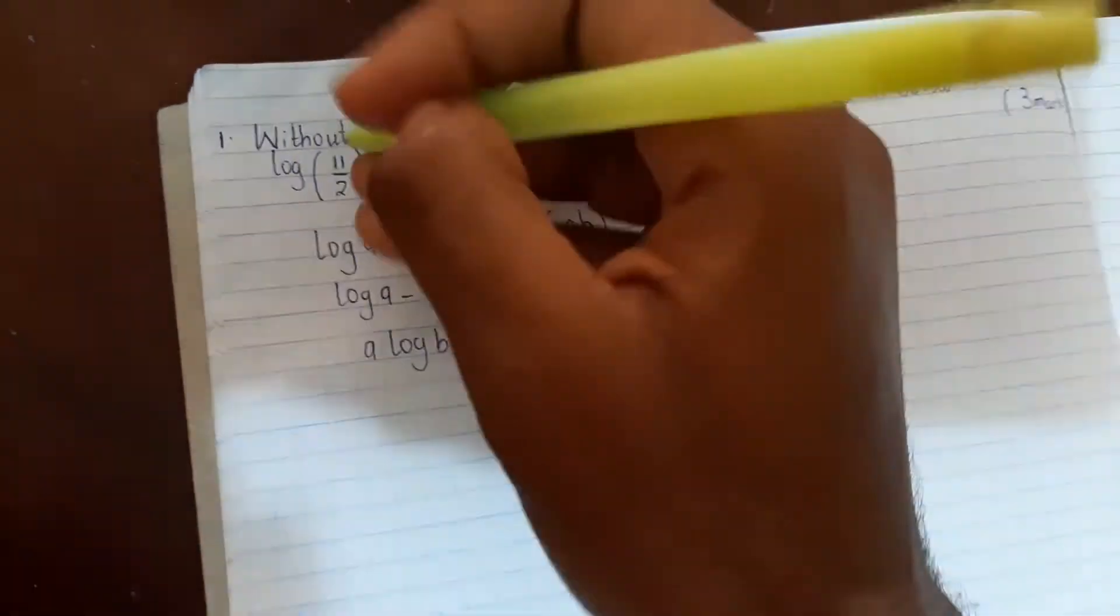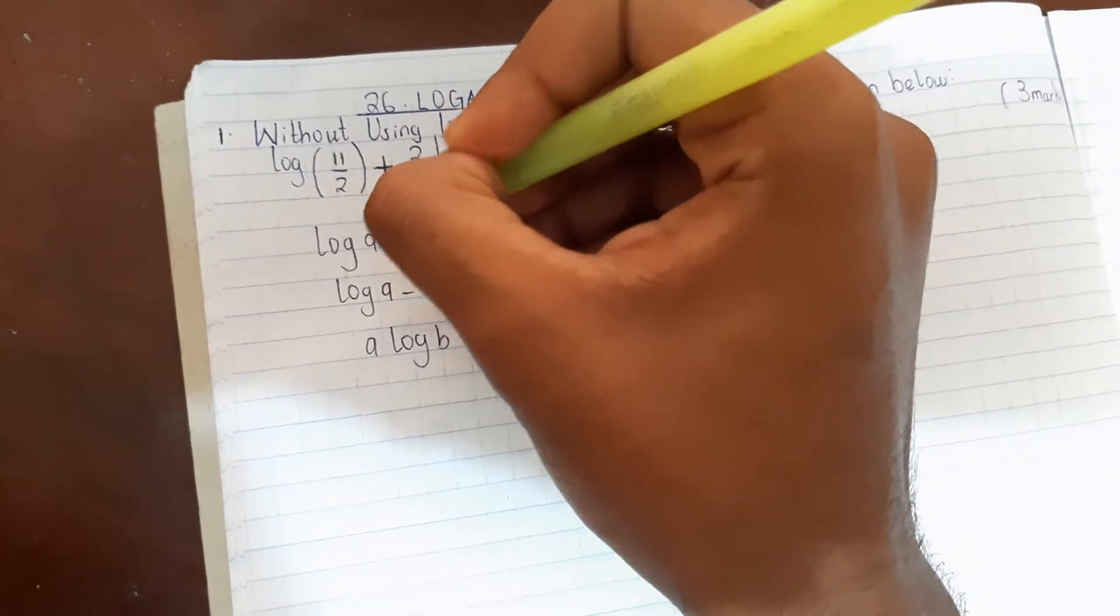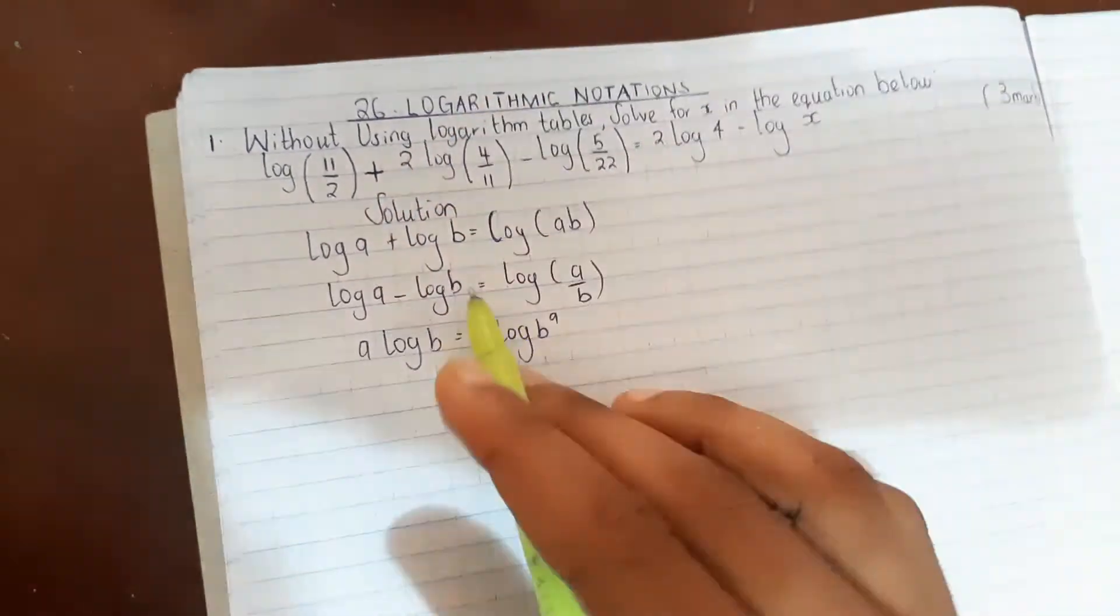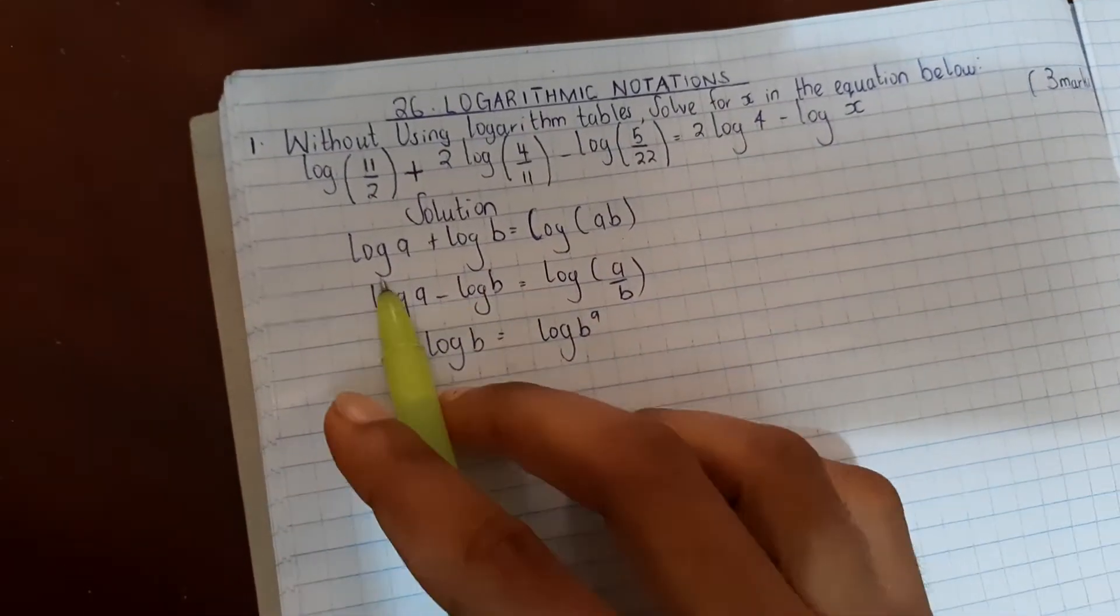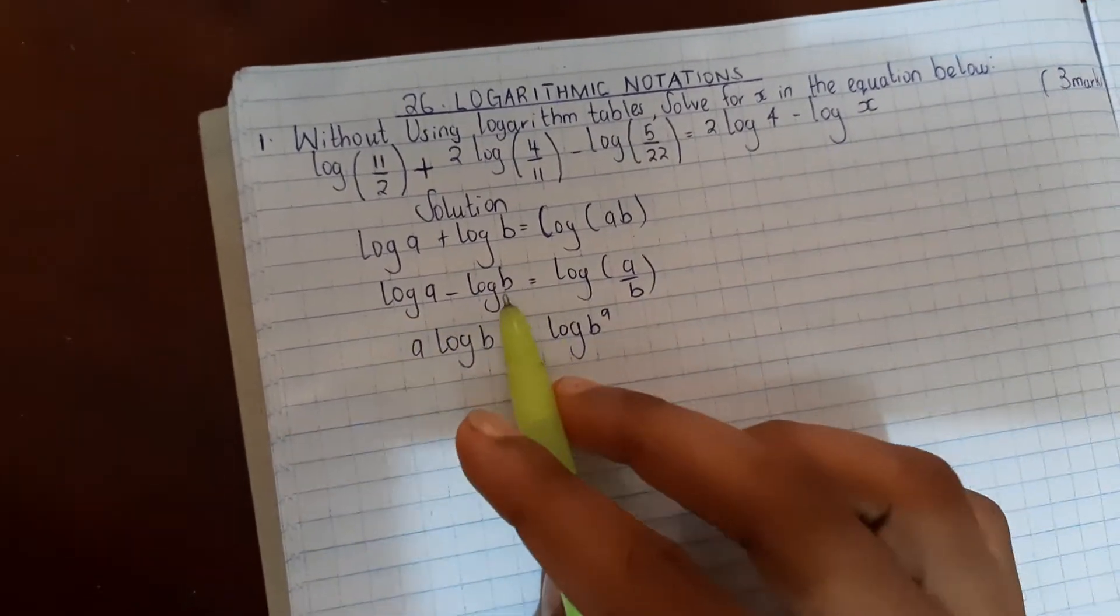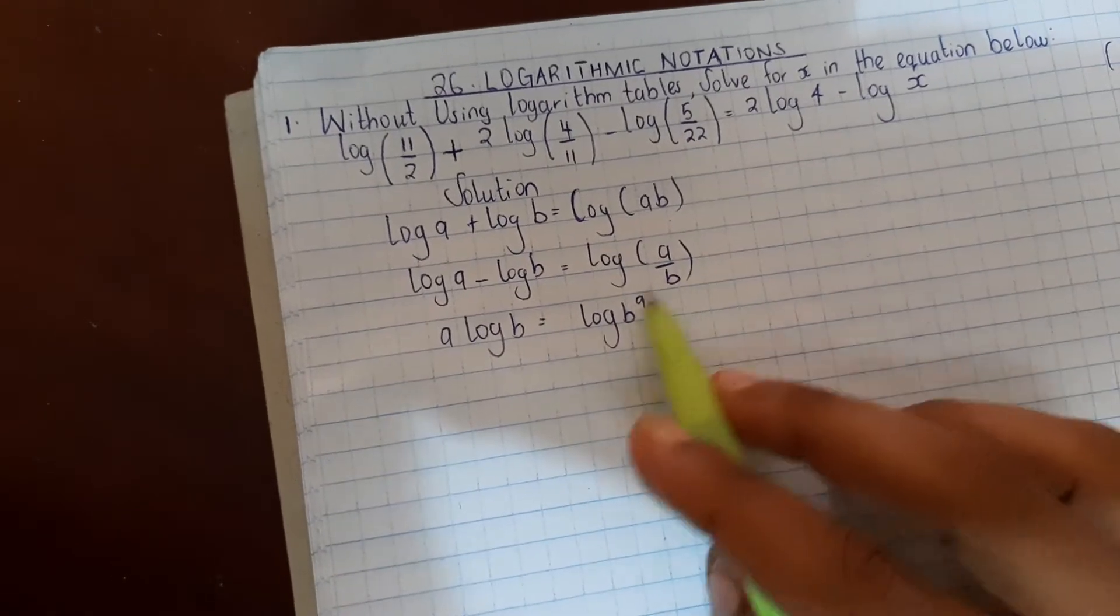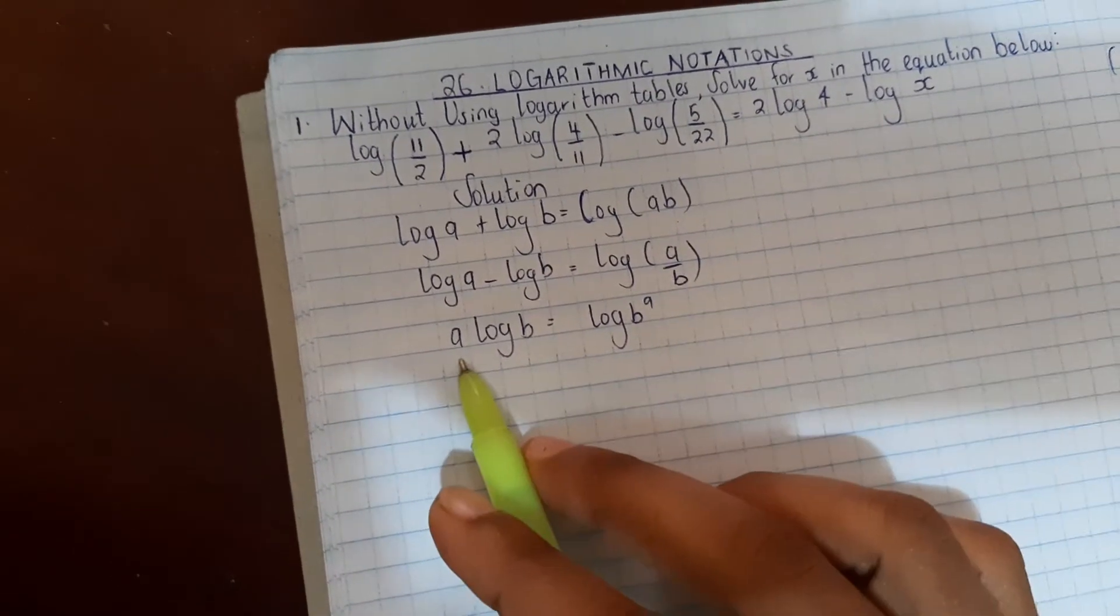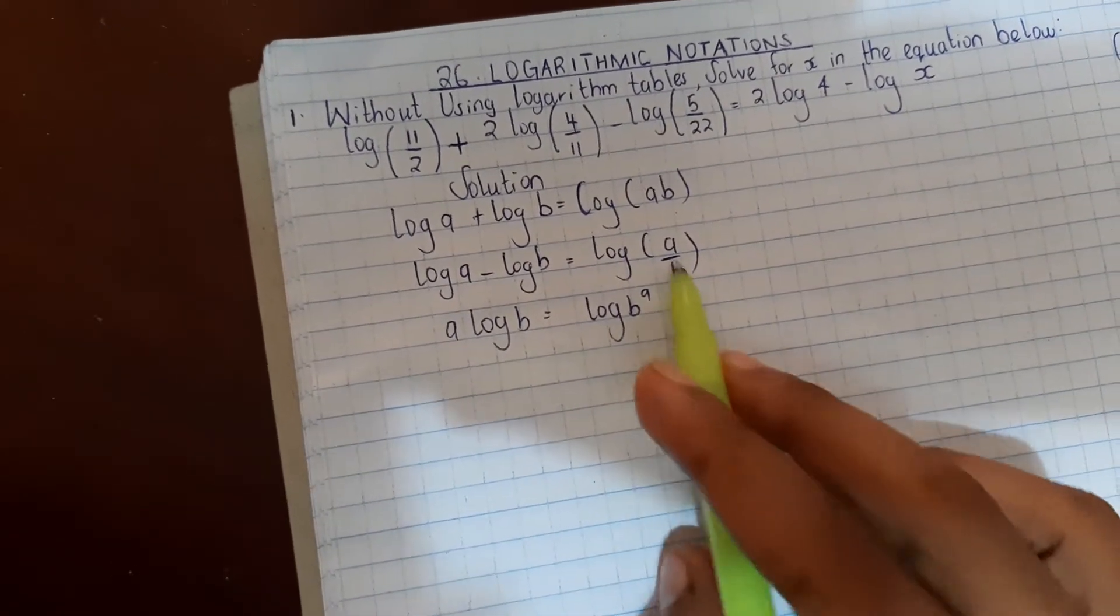Solution. We have the three laws of logs. Log a plus log b equals log a times b. Log a minus log b equals log a divided by b. And a log b equals log b to power a.